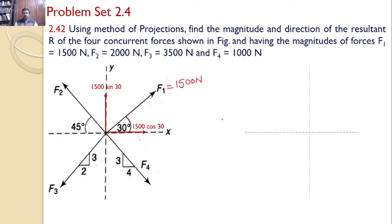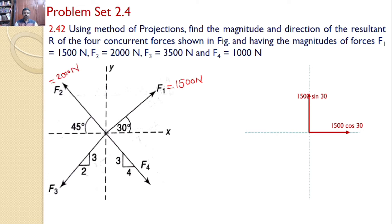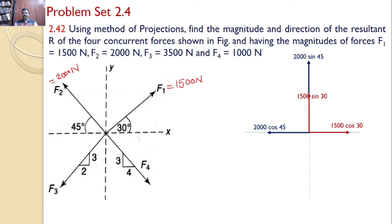Let us transfer these two forces onto the x-y plane for easy analysis. Next, take force F2, whose magnitude is given as 2000 N, and this makes an angle of 45 degrees with the x-axis. The components along the x-axis and y-axis are: the horizontal component is 2000 cos 45, and the vertical component is 2000 sin 45. Let us transfer these forces along the x-axis and y-axis.